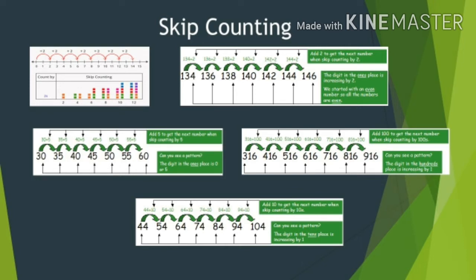We can apply skip counting to large numbers — for example, if the numbers involve lakhs, thousands, or ten thousands, meaning numbers with one and zero (like ten thousand), we can apply this method.